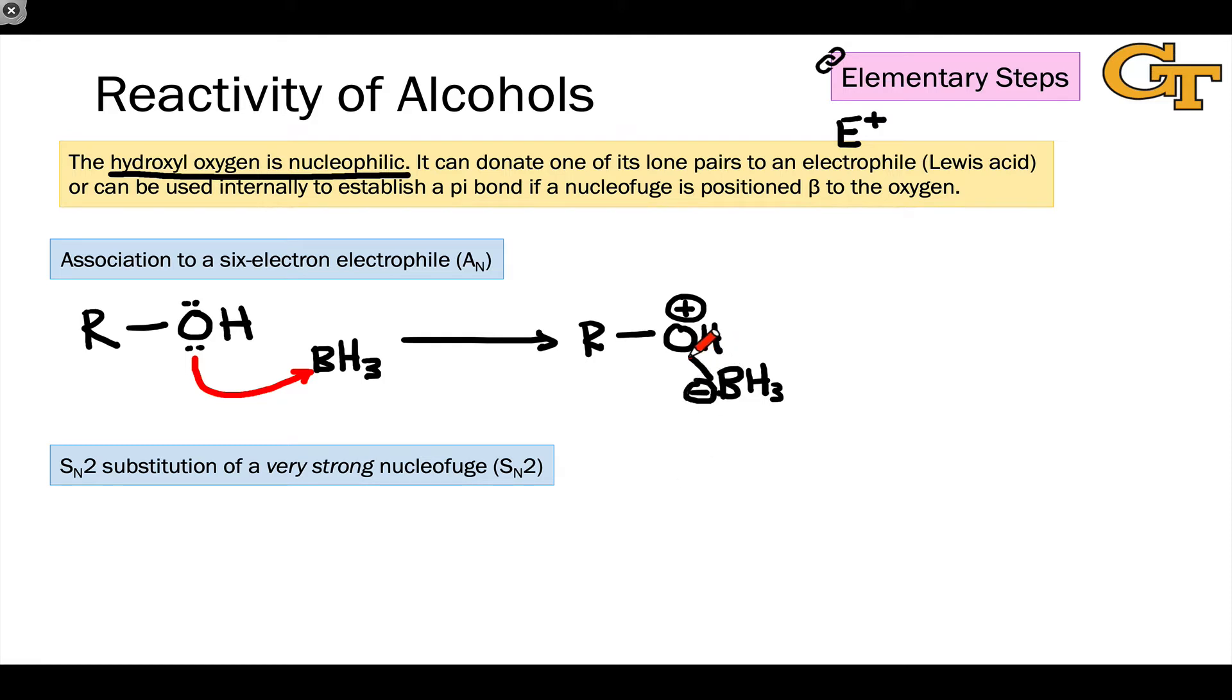The newly formed bond is here, and this coordination of a Lewis acid to the hydroxyl oxygen tends to turn that oxygen into a much better leaving group, or nucleofusion. So this can often be a prelude to cleavage of the carbon-oxygen bond, for example.